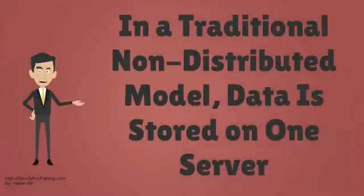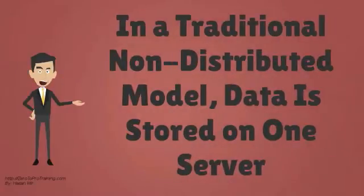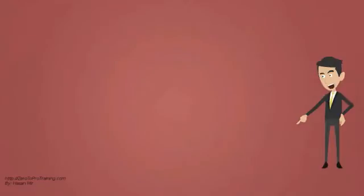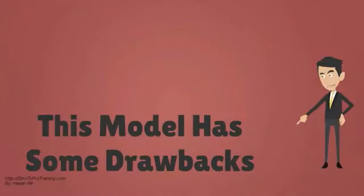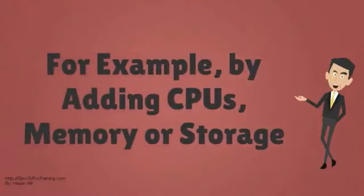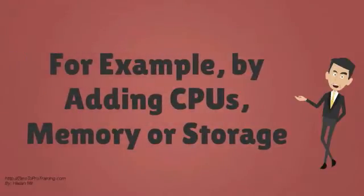In a traditional non-distributed model, data is stored on one server. Client programs access the central data server to retrieve information. This model has some drawbacks. You can only scale vertically, for example by adding CPUs, memory, or storage.